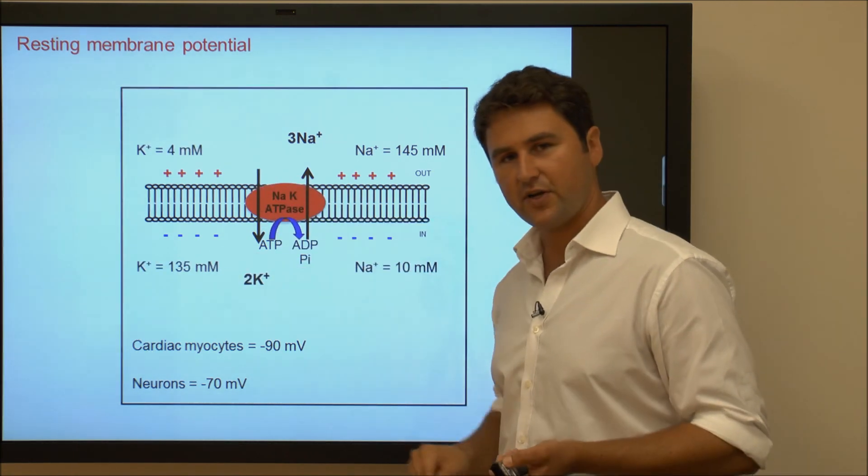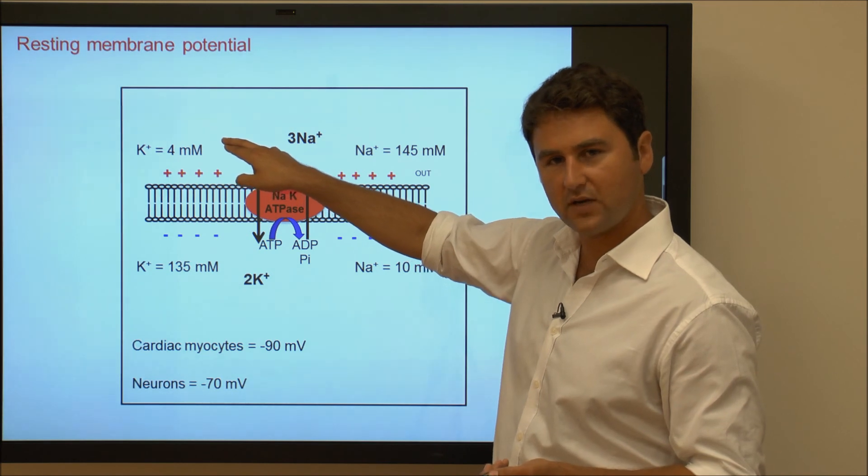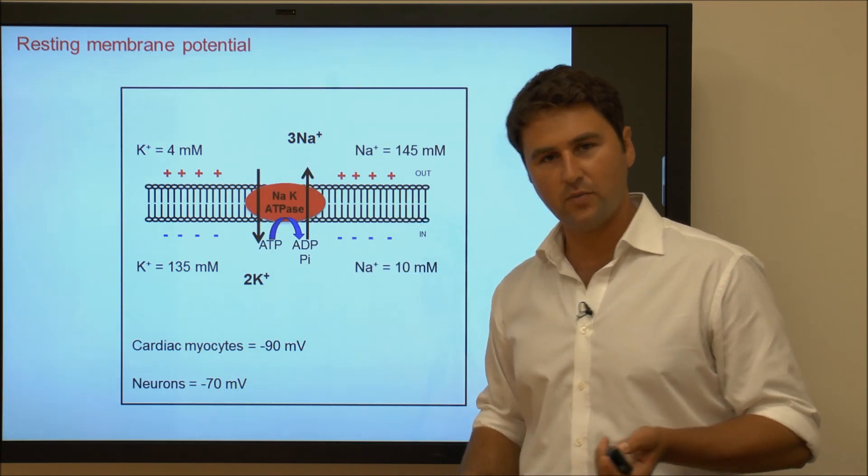Similarly, there is a potassium gradient set up by this process with potassium being 4 millimolar on the outside and 135 millimolar on the inside.